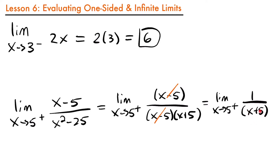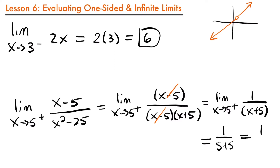Notice that while there's still a discontinuity at x equals negative 5, we're only interested in x equals 5 from the right side. We were able to remove the discontinuity at x equals 5, so it doesn't matter what side we look at — both sides lead to the same y value. Since we removed the discontinuity, we can plug in and evaluate: 1 over (5 plus 5), which equals 1 tenth.